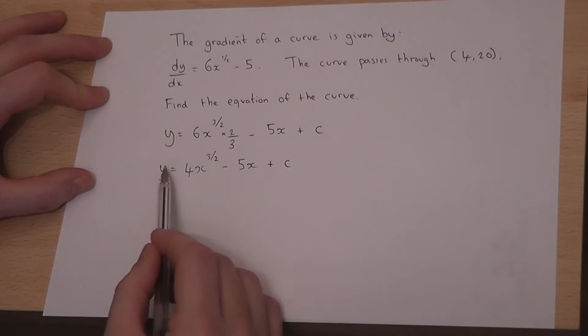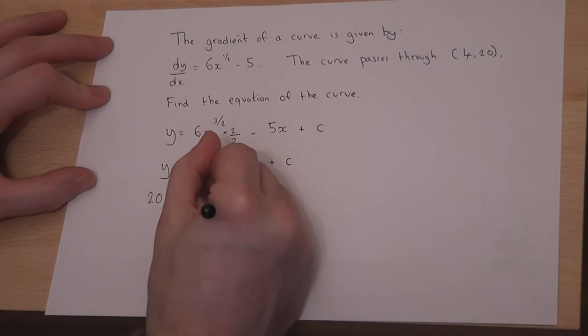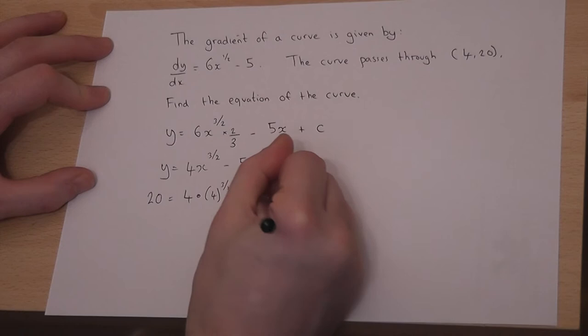So if y is 20, then x is 4, so 4 lots of 4 to the power of 3 over 2, take away 5 lots of 4 plus c.